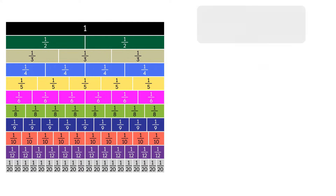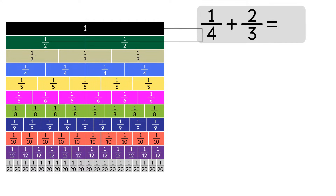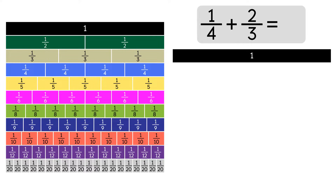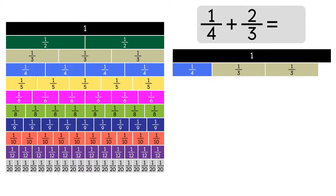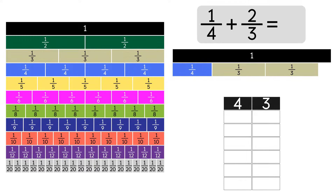Let's do another example: 1 fourth plus 2 thirds. We're going to use 1 as a benchmark. Now let's put together our strips. We'll put 1 fourth. To make 2 thirds, we're going to use 2 strips of 1 third.